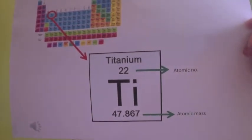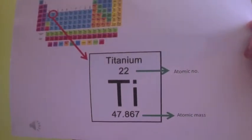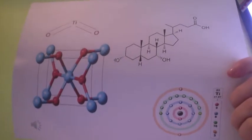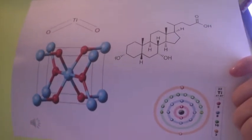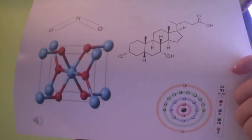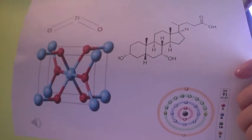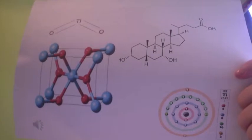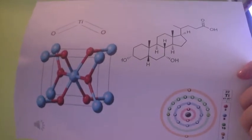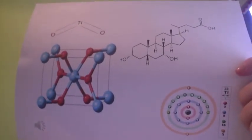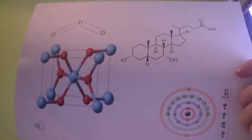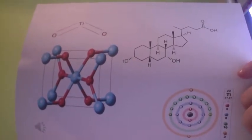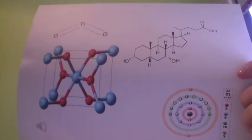TiO2 occurs naturally as the mineral rutile. Rutile has a radius ratio of 0.591. The cubic holes are too large to be structurally suitable. Therefore the TiO2 ions will prefer to occupy octahedral holes in a closest packed structure. Nature chooses to pack the oxide ions in rutile in a hexagonal closest packed structure.